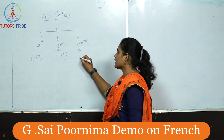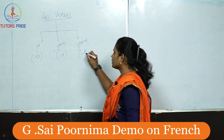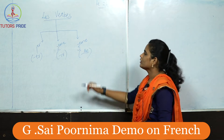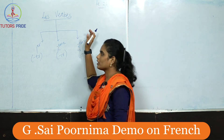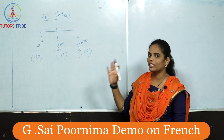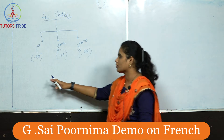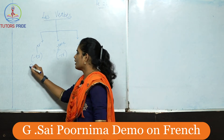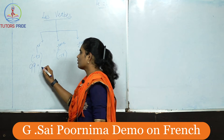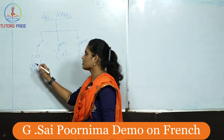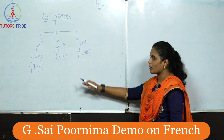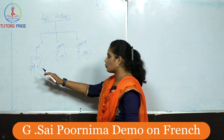The third group verbs mostly end with RE. In French you have to remember that we have many exceptions. 99 percent of the verbs end with ER, and there are a few exception verbs.